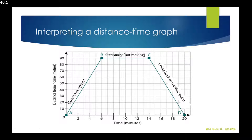For example, Akada is leaving home, going on an errand at point B, staying there for a few minutes, then going to C, and then heading back home.